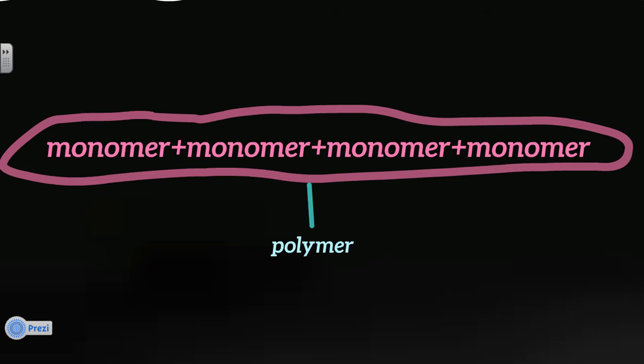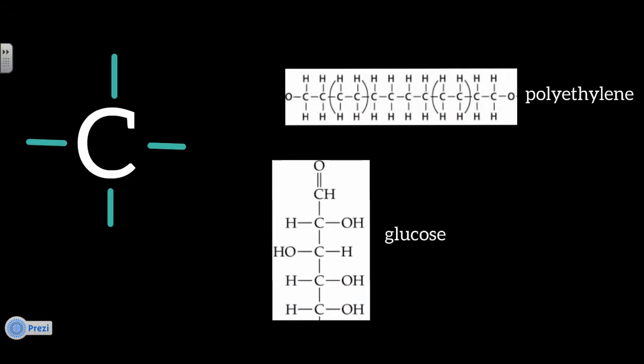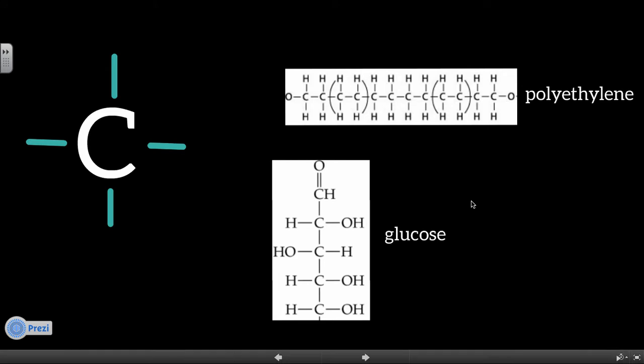Monomers can be just one atom or they can be a couple different atoms together. So here's a couple examples. So we have two examples here. This one on the bottom is glucose, sugar. So the monomer of the glucose polymer is HCOH. So HCOH, HCOH, HCOH. Those HCOHs are the monomers, which then together creates the glucose polymer.